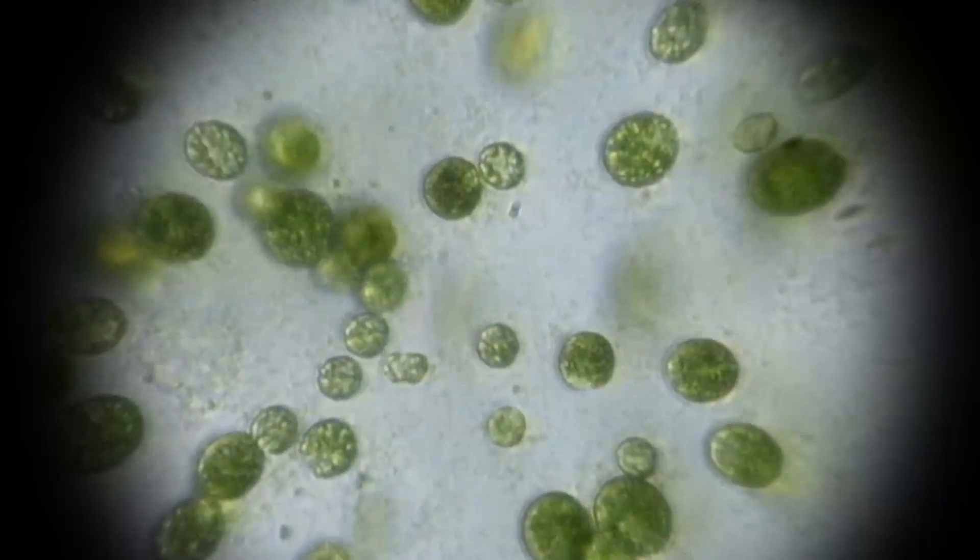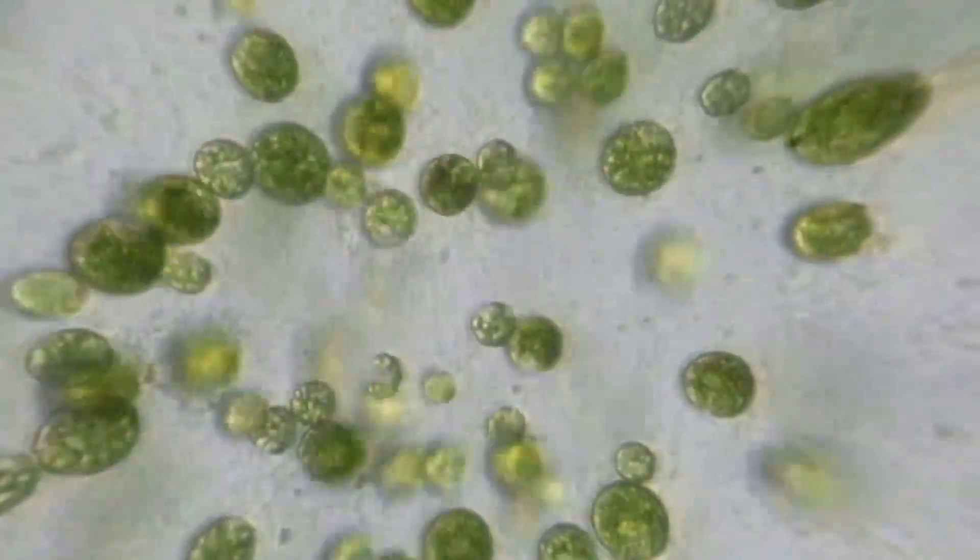The algae may benefit because of nitrogen, that's a waste product for the salamander, but that can be utilized for their cells' metabolism. We're pretty sure that the algae are able to grow to high densities and they get some nutrients that they would not be able to get outside in the pond.